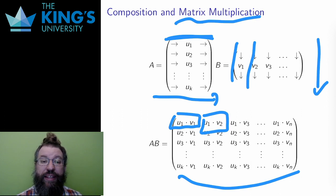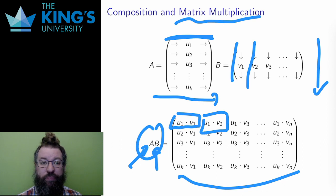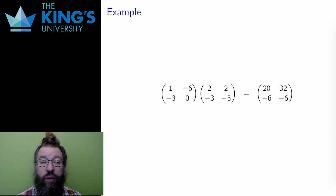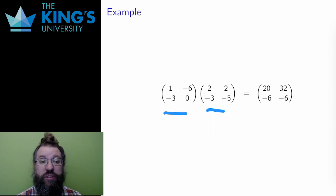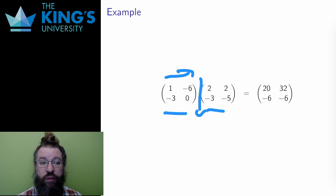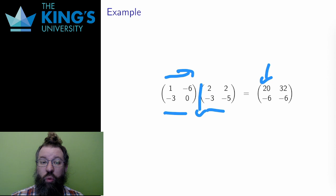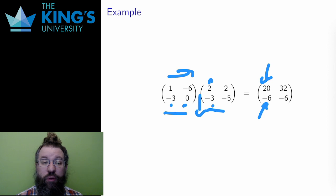As always with composition, it is read right to left: AB represents the transformation that does B first and then A. Let me be more concrete with two 2×2 matrices, both representing transformations of R2 onto itself. The first entry comes from the first row and first column: 1·2 + (−6)·(−3) = 20. Then the first row and second column: 1·2 + (−6)·(−5). The second row and first column: (−3)·2 + 0·(−3) = −6. Finally, the second row and second column: (−3)·2 + 0·(−5) = −6.